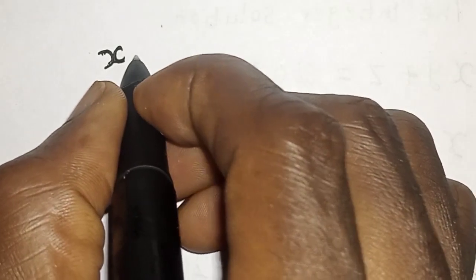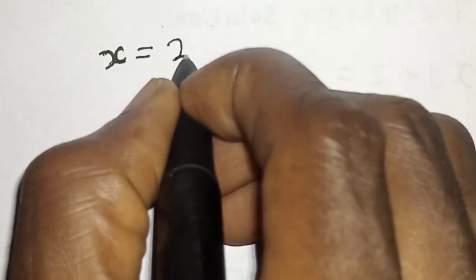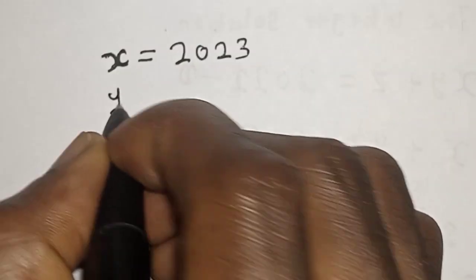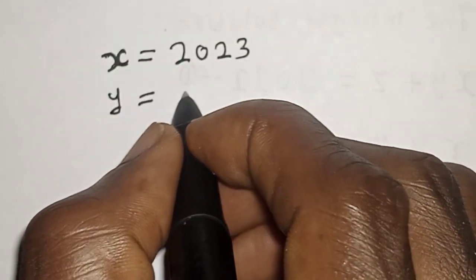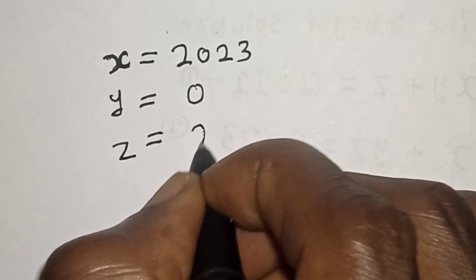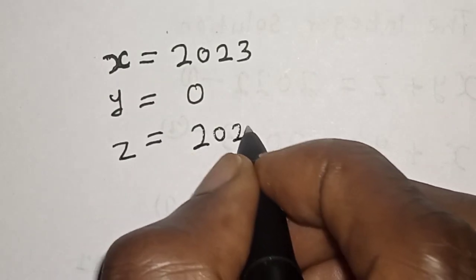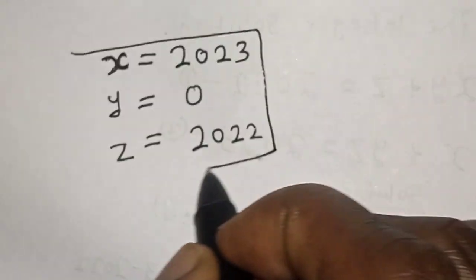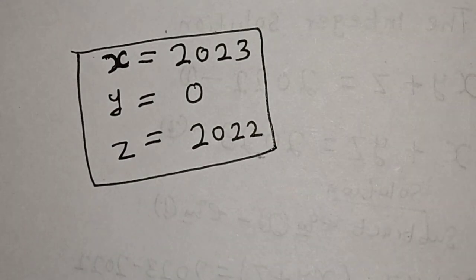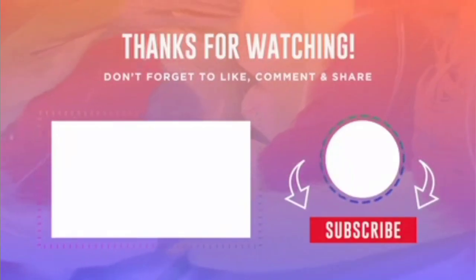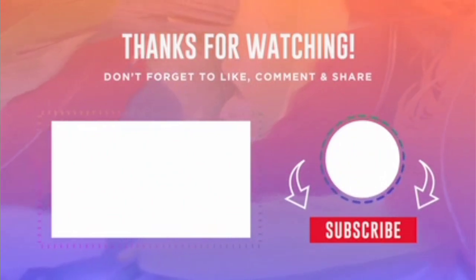The only integer solution we have is from the first case: x equals 2023, y equals zero, and z equals 2022. That is our final answer. If you enjoyed the class, please don't forget to like, share, comment and subscribe. Thank you.